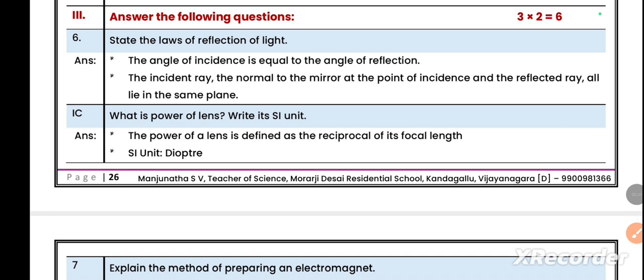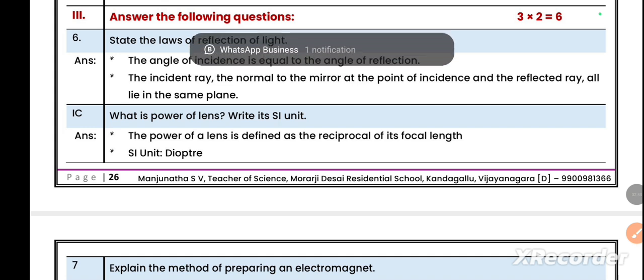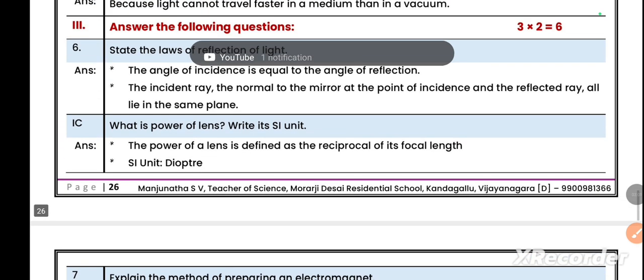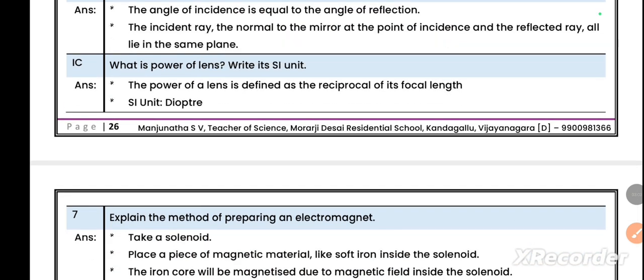Question number three: answer the following questions, each carrying two marks. Total three questions for six marks. Sixth one: state the laws of reflection of light. Very important. The angle of incidence is equal to angle of reflection. Second law: the incident ray, the normal to the mirror at the point of incidence, and the reflected ray all lie in the same plane. Another question: what is the power of lens? Write its SI unit. The power of lens is defined as the reciprocal of its focal length. The SI unit is diopter.